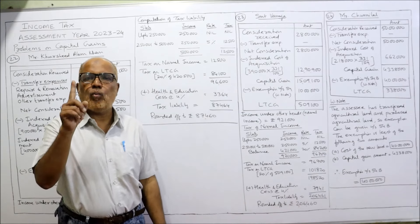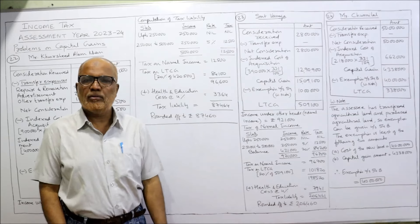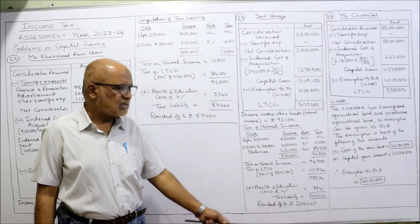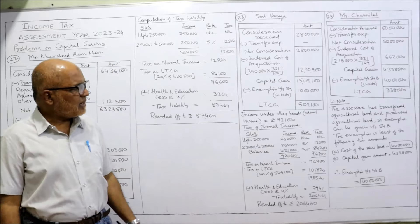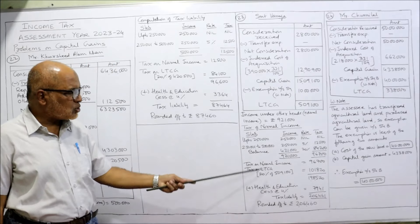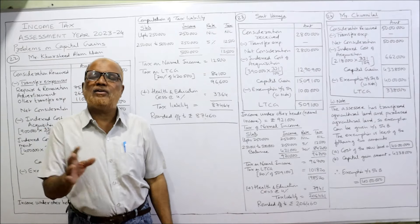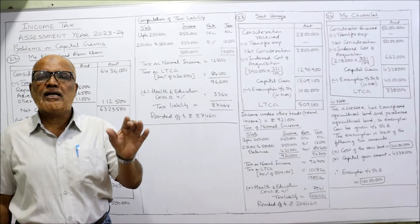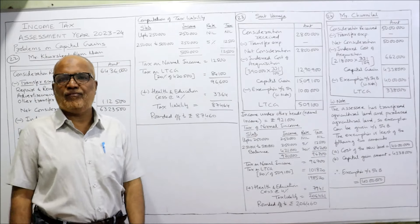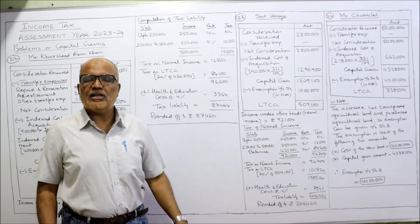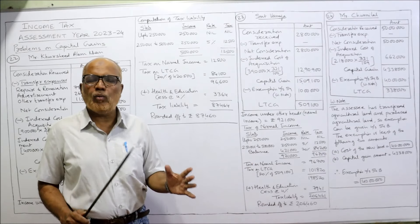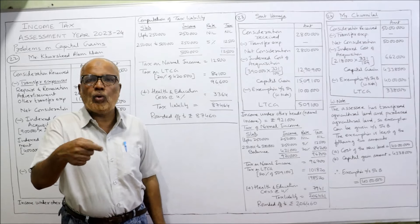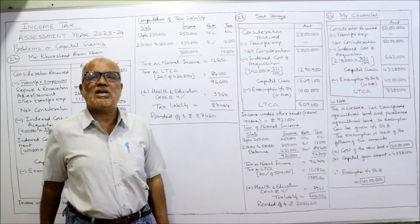Adding 4% health and education cess: Rs. 7,941. Total tax liability: Rs. 2,06,461, rounded off to Rs. 2,06,460. In examination you must show all these calculations and also write about the exemption under section 54. Always keep a notebook ready while watching this video and note down the points being explained.